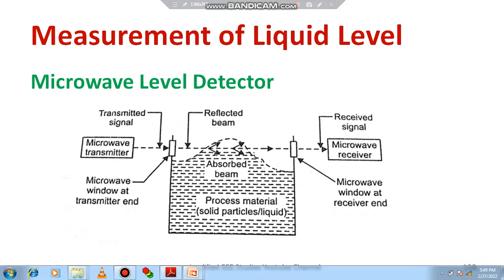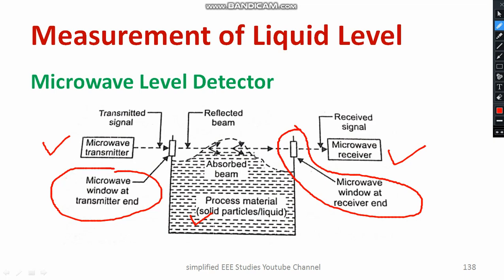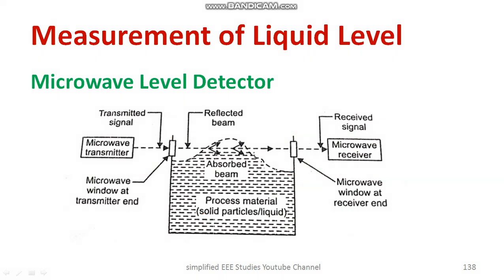Consider the diagram. Our ultimate target is to measure the liquid level of the process material, which may be solid particles or liquid. We have a microwave transmitter with a microwave source and a microwave receiver. A microwave window is required at both the transmitter end and the receiver end. The microwave beam is passed through the window at a desired frequency, and the time taken for the microwave to travel from the transmitter to the receiver is measured. If there is no liquid, it reaches very quickly; if there is liquid, it blocks the movement of the microwave, and the time duration is measured accordingly.